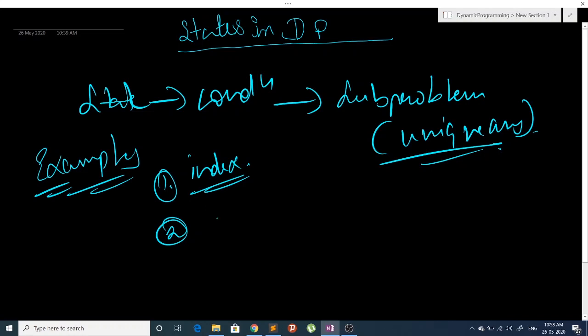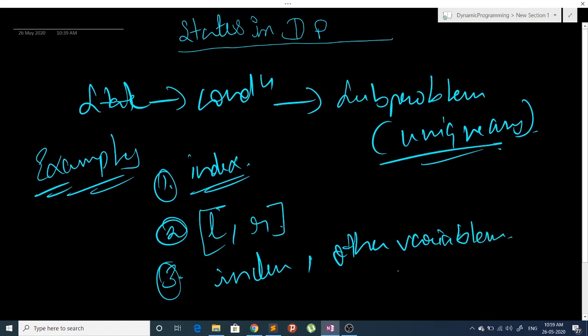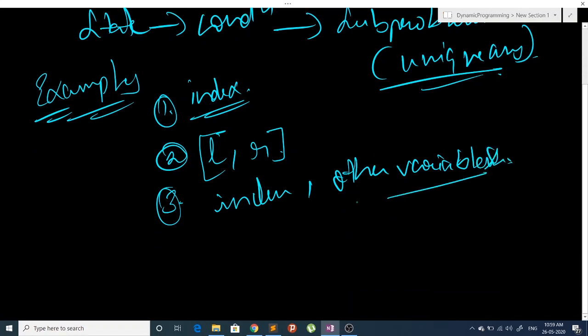In some problems we have to define our state as the range L to R. And in other examples we have to combine these two with some other variables. So these are all states for some problems. Let's see our example of knapsack problem.